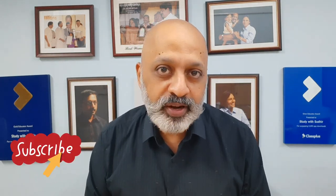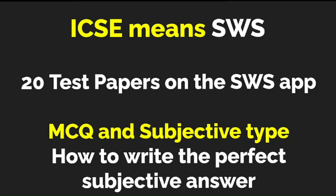Let's get started with the MCQ question-and-answer format on history. There are 25 questions in this particular video. If you need more questions, we have 20 test papers on the SWS app — the link is in the description box — containing both MCQ and subjective type questions, telling you how to write the perfect subjective answer. It contains all kinds of questions: easy, medium, difficult, and application-based, for a comprehensive revision ahead of your history and civics board examination for Semester Two.